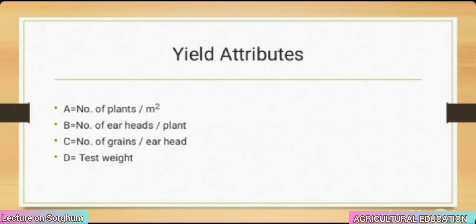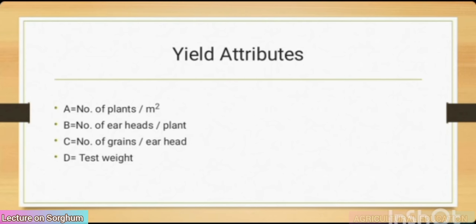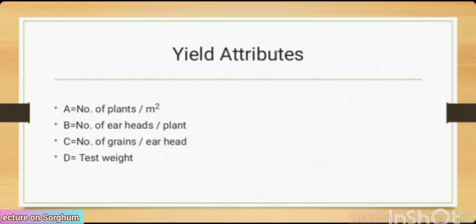Yield attributes: A = number of plants per m², B = number of ear heads per plant, C = number of grains per ear head, D = test weight.